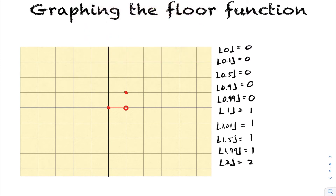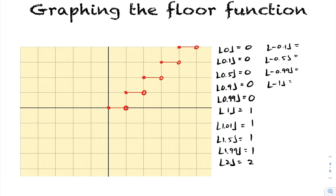Continuing on: floor of 1.01 is one, floor of 1.5 is one, floor of 1.99 is one, then it jumps up to two. The pattern repeats: flat line, open circle, jump up — flat line, open circle, jump up — continuing in that way. In the negative direction, the floor of negative 0.1, negative 0.5, negative 0.99, and negative one all equal negative one, with solid dots and open circles following the same stepped pattern going downward.